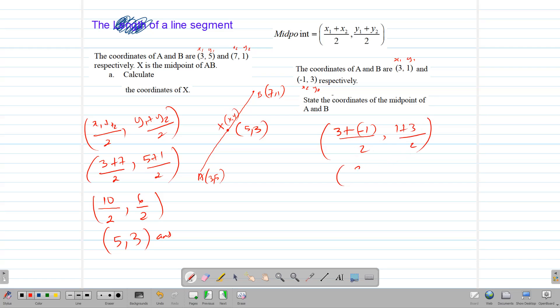3 plus negative 1 is 2 over 2. 1 plus 3 is 4, 4 over 2. 2 divided by 2 is 1. And 4 divided by 2 is 2. So this would be the midpoint of this line that passes through A and B.